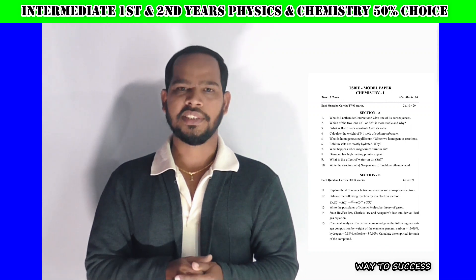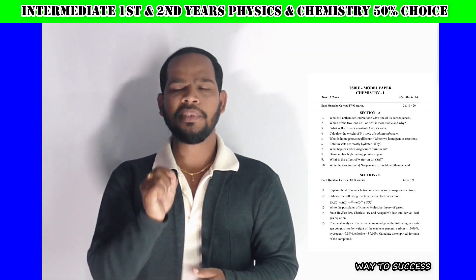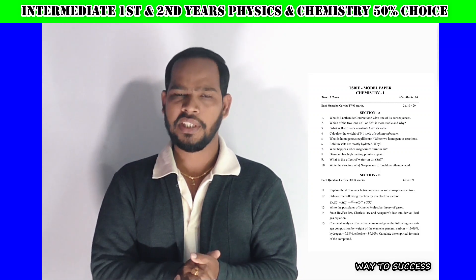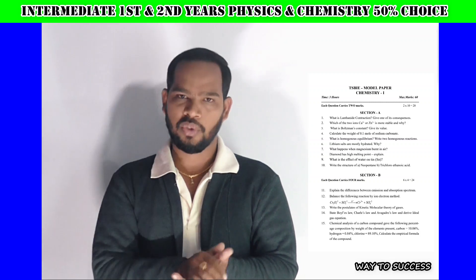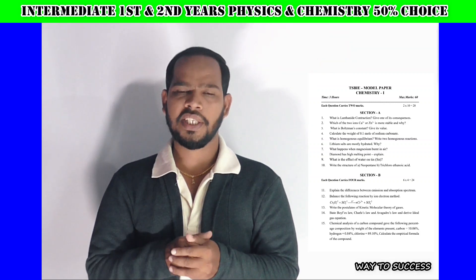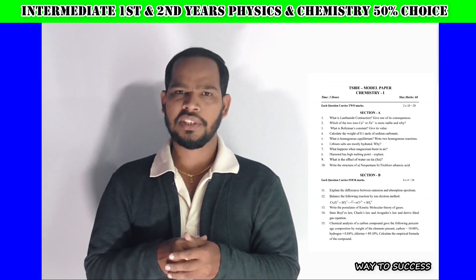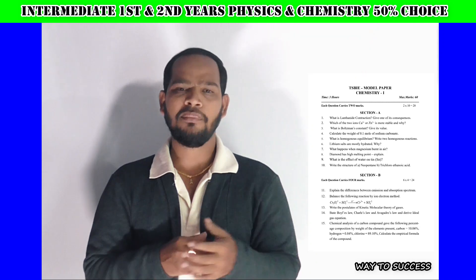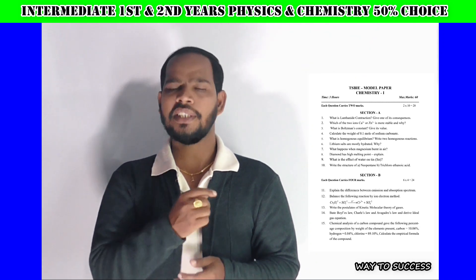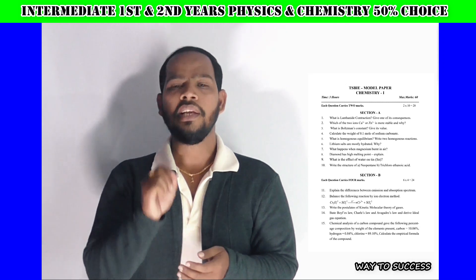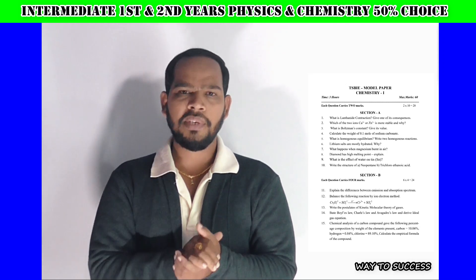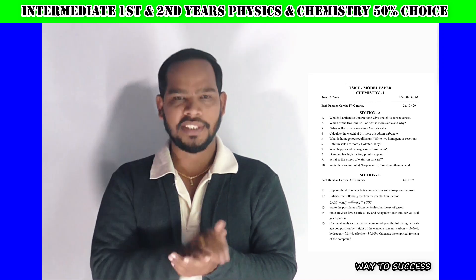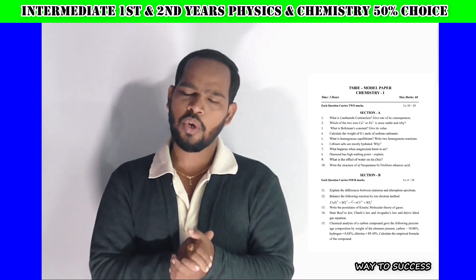Now coming to Chemistry first year. If you read Chemistry first year — same as Physics first year. Section A: two-mark questions, 10 marks, 10 marks, no choice. Next, coming to Section B. In your public examination, they will give you 12 questions — just you can write only 6. This is about 50% choice.